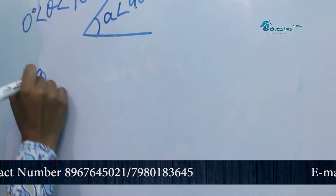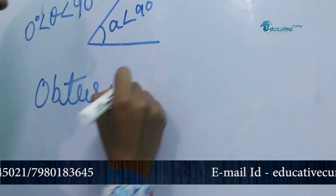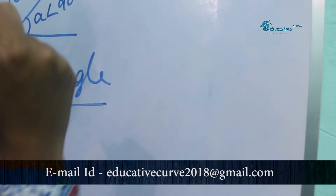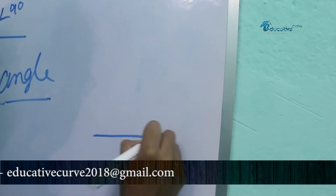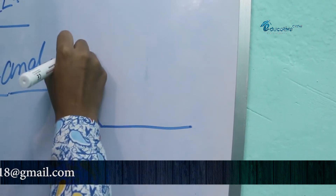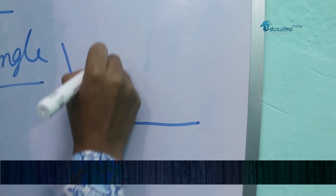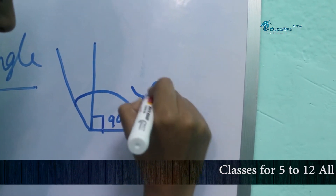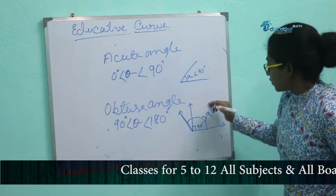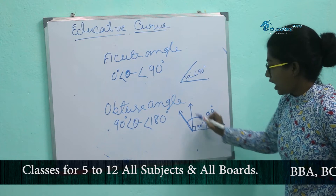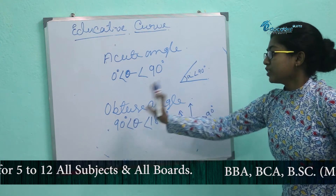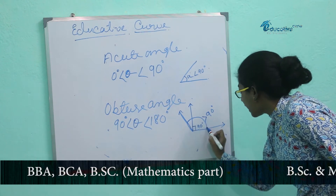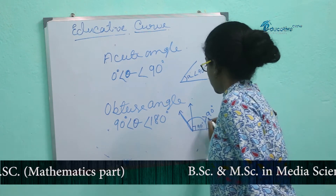Now, obtuse angle. The angle which is greater than 90 degrees but less than 180 degrees is called an obtuse angle. This is a right angle which is 90 degrees. According to the definition, an obtuse angle is greater than 90 degrees, so we can draw it like this — which is greater than 90 degrees.